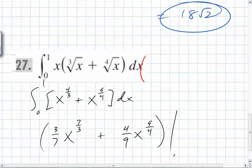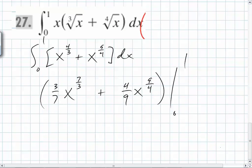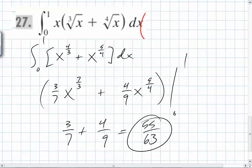And you're doing this from 0 to 1, the nicest region possible. You plug in 1 and what do you get? 3 sevenths plus 4 ninths. And what's that equal to? 55 over 63. That's where it comes from.